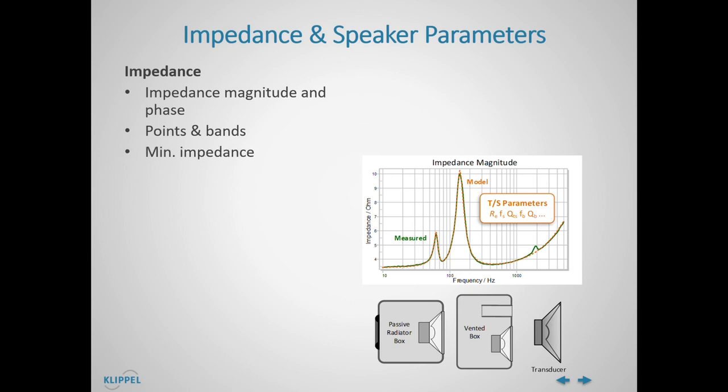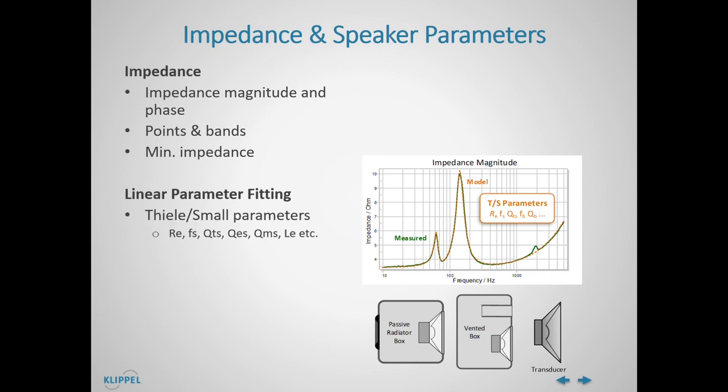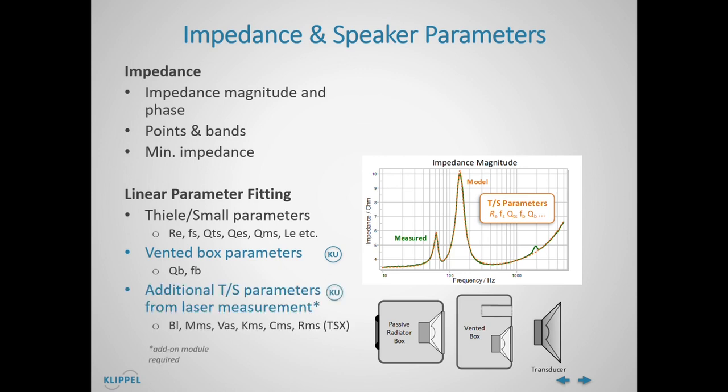Based on the impedance magnitude and phase, linear parameters are determined, such as Thiele-Small parameters — some of the most famous are RE, FS, QTS, and so on. There are even vented box parameters like QB and FB — that's a unique feature. Additional Thiele-Small parameters from optional laser measurement, like BL, MMS, and so on, are also available.